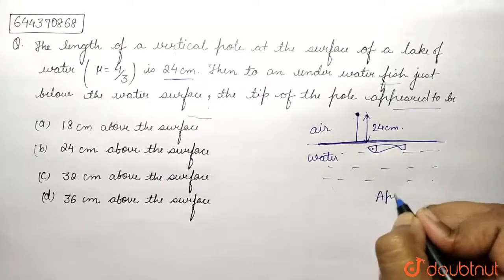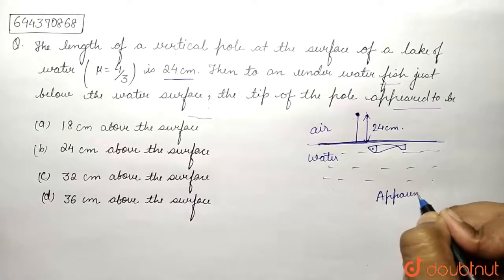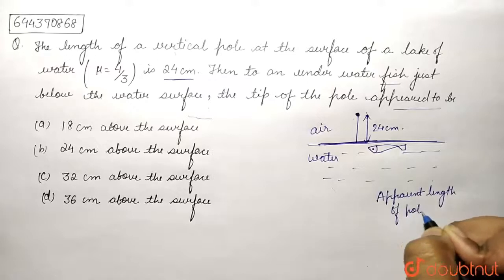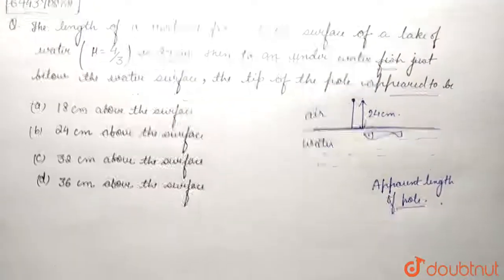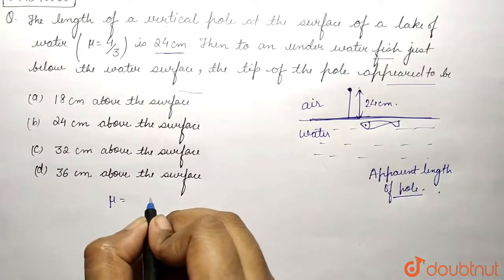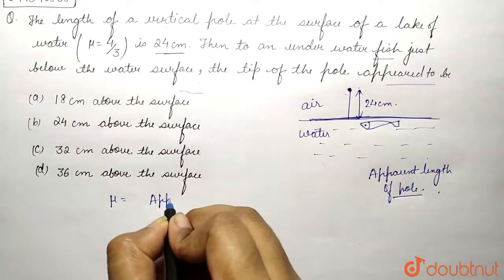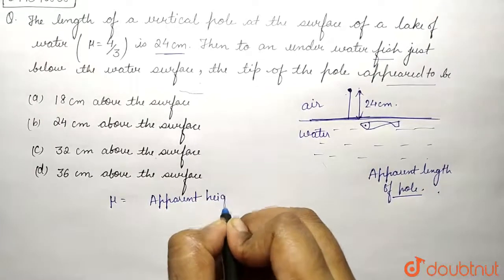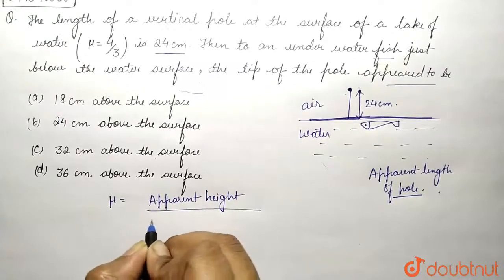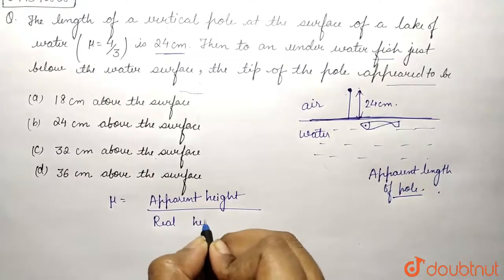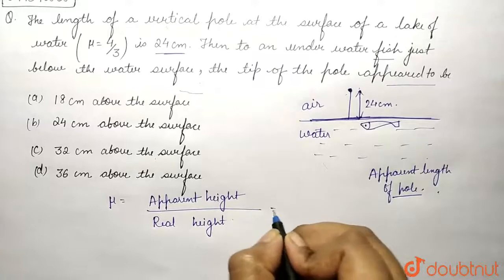Now we know that mu, the refractive index, is equals to apparent height. We know that there is a difference of height because due to refraction, the distance or the height of the pole is different than the real height. We can have a similar